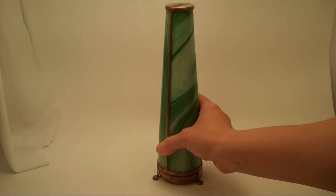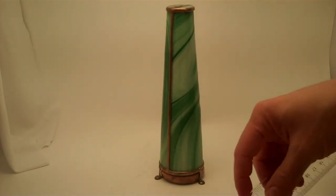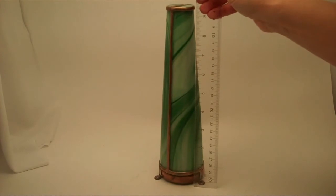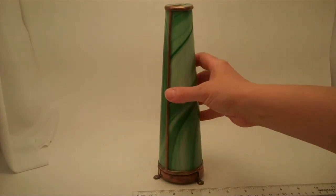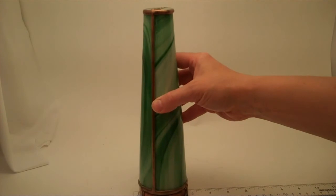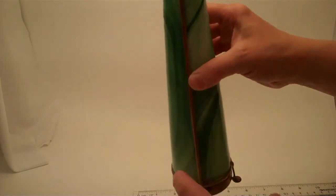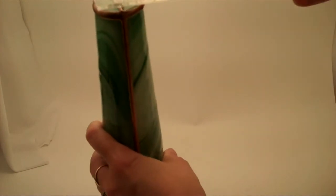This kaleidoscope measures an overall height of just over nine and a half inches and has a diameter of the object chamber of two and three quarter inches. The diameter at the eyepiece is approximately an inch and a half.